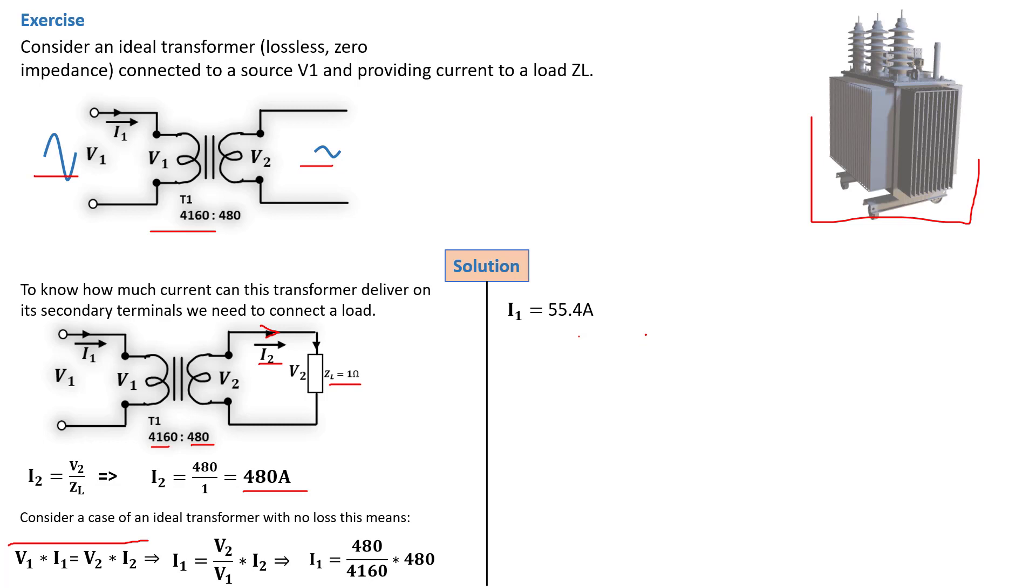Since we've determined the primary current, we can use Ohm's law to deduce the equivalent impedance of the transformer. V1 equals Z_equivalent times I1, and that gives us Z_equivalent of 75.1 ohm. The Z_equivalent is basically the transformer impedance based on the current being delivered on the primary. When performing power system analysis, this 75.1 ohm is the actual circuit impedance that limits the 4,160 volts to only 55.4 amperes of current from the primary.